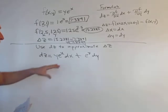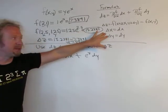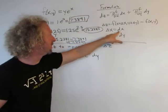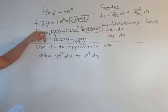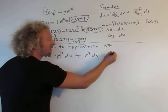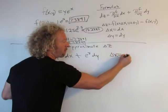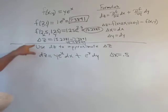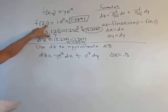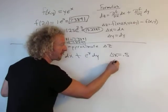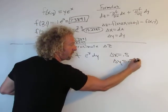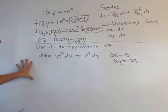Now we can plug everything in. If you look over here, you'll see we have these formulas. Δx = dx. What's Δx? It's the change in x. We went from 2 to 2.5, so Δx is 0.5. Δy: we went from 1 to 1.25, so Δy is 0.25.